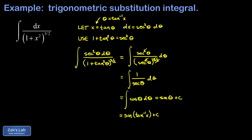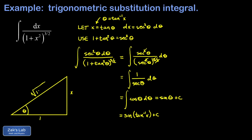It's not normally acceptable to leave the answer this way, because we can simplify it into algebraic form. We start by visualizing the angle whose tangent is x with a right triangle. Theta is the angle whose tangent is x, so the opposite side over the adjacent side equals x — we make the opposite side x and the adjacent side 1. Applying the Pythagorean theorem, the hypotenuse is the square root of 1 plus x squared. Squaring the adjacent and opposite sides gives 1 plus x squared, which is the square of the hypotenuse. So we're good.